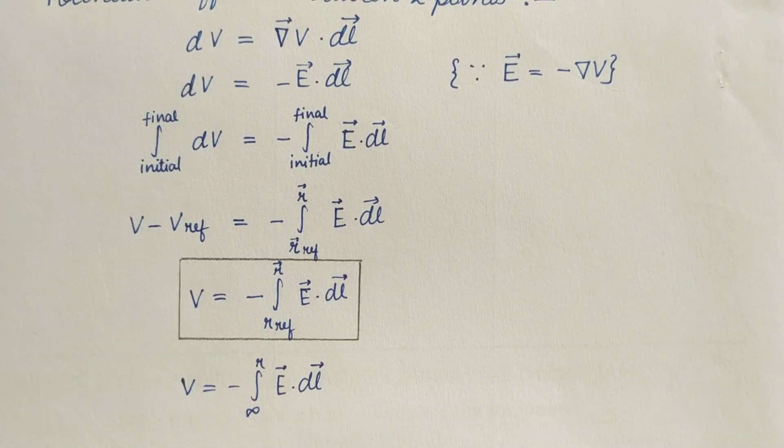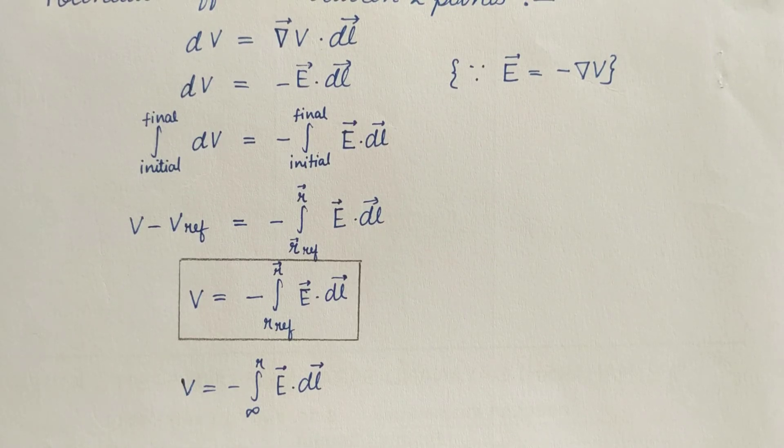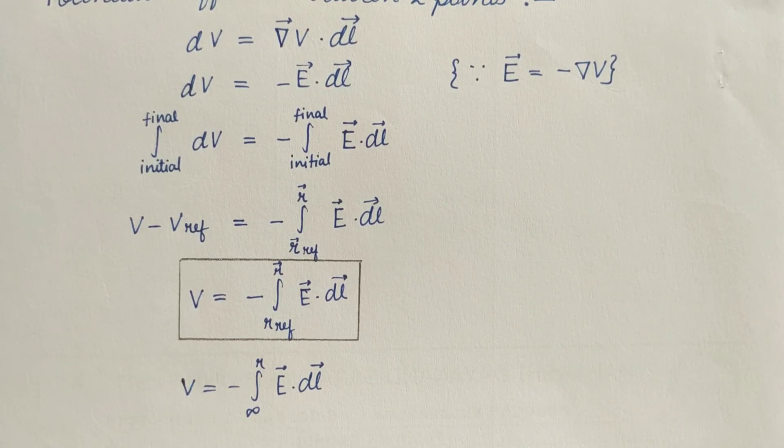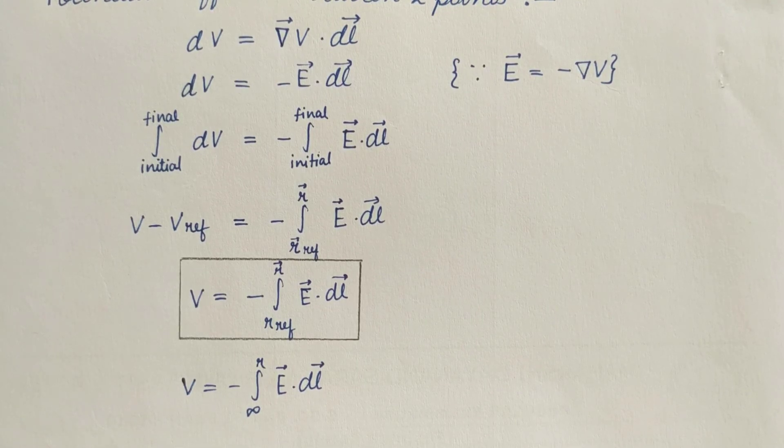We know that electric field is the force on the unit test charge. Therefore from this equation we can say that electrostatic potential at a point is the work done in bringing a unit positive test charge from infinite to that observation point without changing the kinetic energy of this unit test charge.